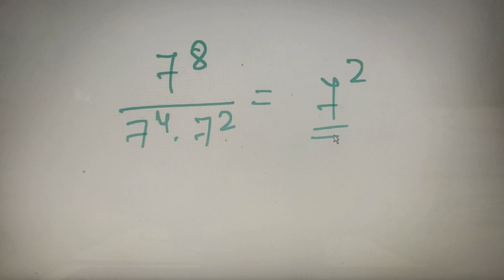The highest power of 7 in 50C20 is equal to 7 to the power 8 divided by 7 to the power 4 into 7 to the power 2. Using the formula of indices, we get our final answer as 7 to the power 2. So the highest power of 7 in 50C20 is equal to 7 squared.